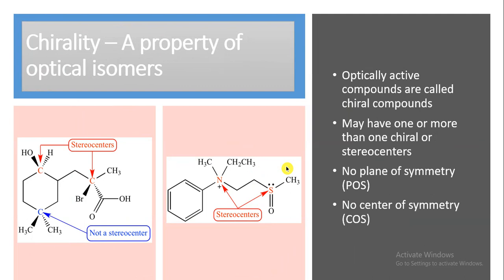Chirality is the property of optically active isomers, so optically active compounds are called chiral compounds. They may have one or more chiral centers or stereocenters with no plane of symmetry or center of symmetry. Here we have examples where chiral centers have four different groups attached. The stereocenter or chiral center may or may not be carbon — here we have shown nitrogen and sulfur as chiral centers.